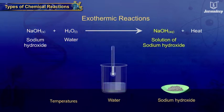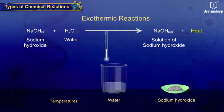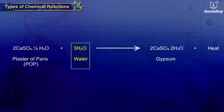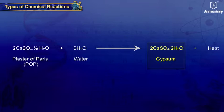Exothermic Reactions: This is an exothermic reaction. In this case, plaster of Paris on addition of water converts to gypsum with the evolution of a small amount of heat.